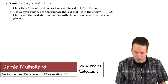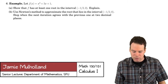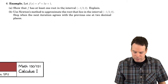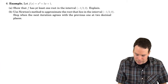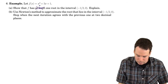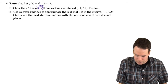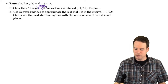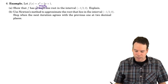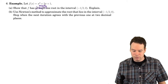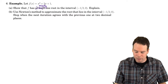Let's have a look at this last example. We have a function x cubed plus 3x plus 1, and we want to show that f has exactly one root in the interval negative one-half to zero. And then once we know that there exists a root, particularly exactly one root, we're going to try to approximate it.